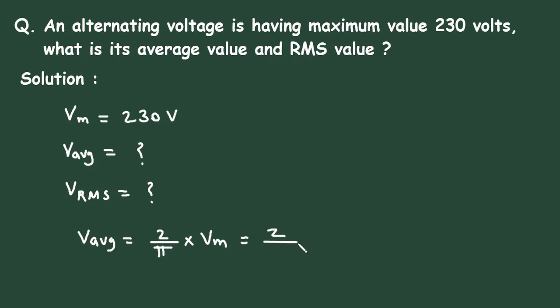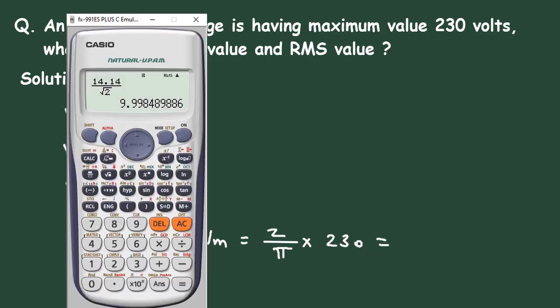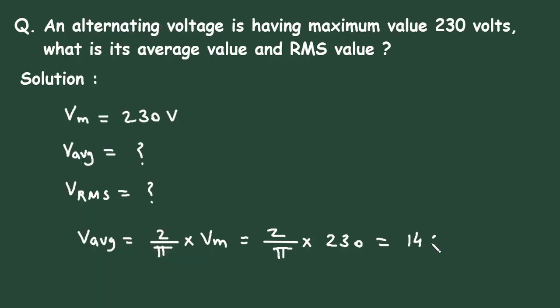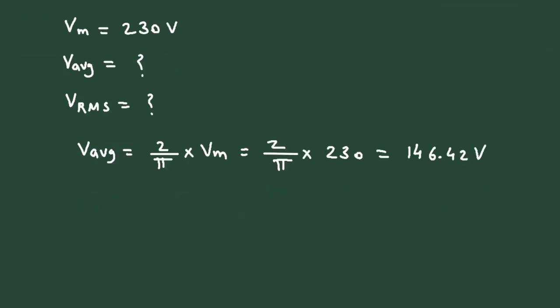So 2 by π into Vm value is 230 volts. It is equal to 2 by π. Remember that 2 by π is 0.636, then multiplied with 230. It is 146.42 volts.